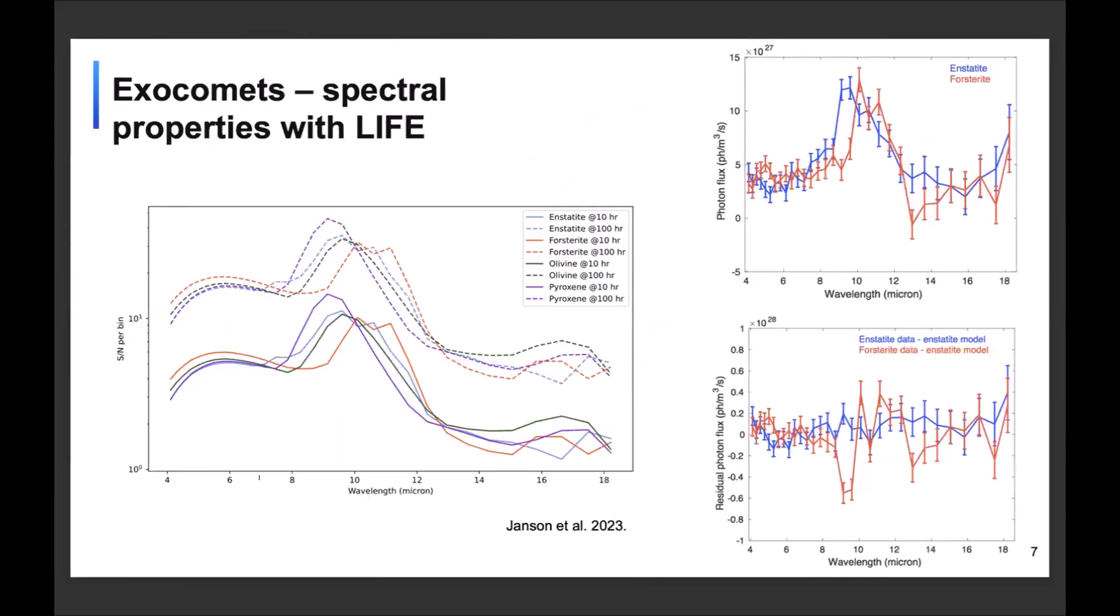So very quickly, because we were already probably a little bit over time. So just two more points. One is, what can we say about comets if we detect them? Well, we can start to do mineralogy, for example. And so we get a spectrum with LIFE, which even at the low resolution of LIFE can tell us quite a lot about the constituents of the cometary dust. So for example, this is a simulation of what LIFE would see for a comet if it consists of enstatite grains versus if it consists of forsterite grains.